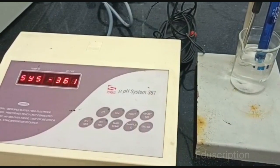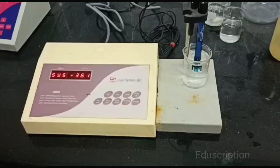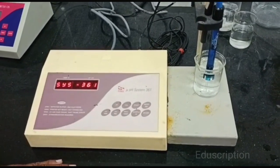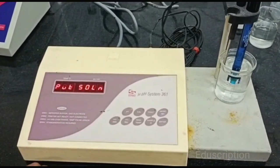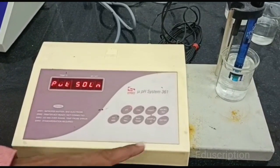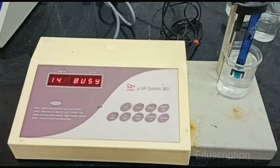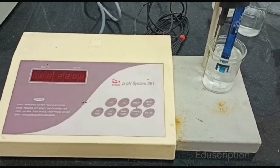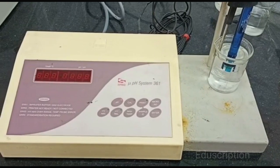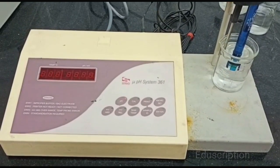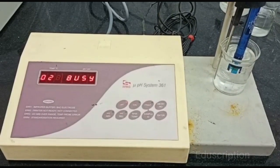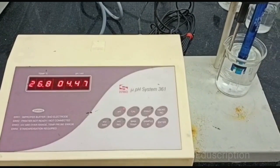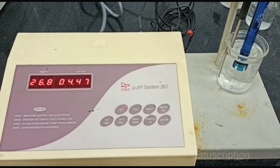Now we will go for second beaker. This is second beaker and we detect the pH value of that beaker. So press pH key, then enter. After 15 seconds it will show the temperature and pH value of that beaker.